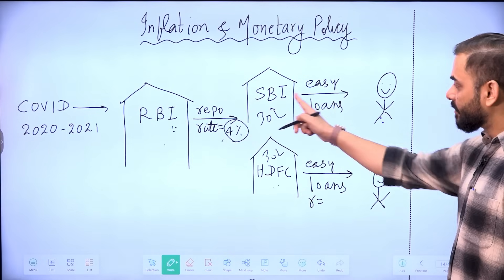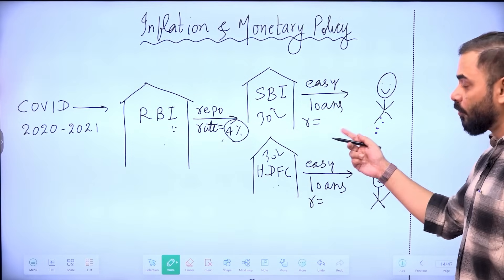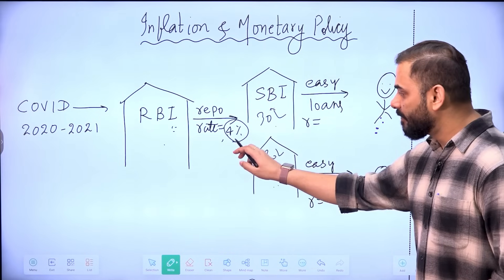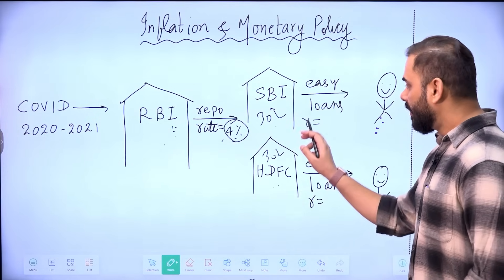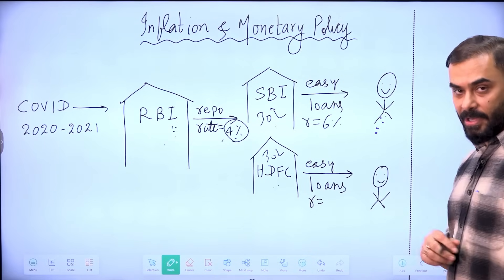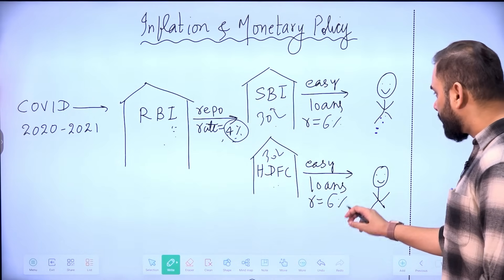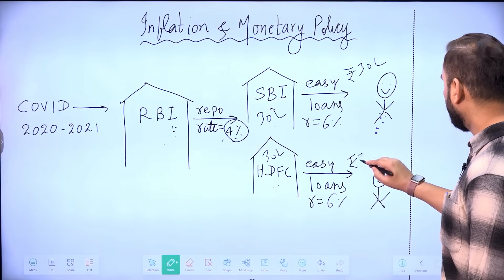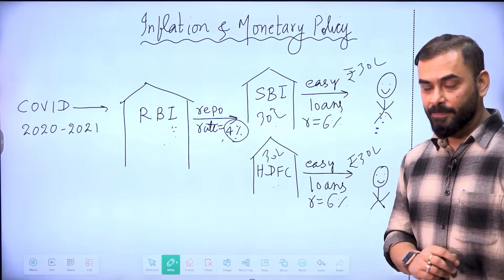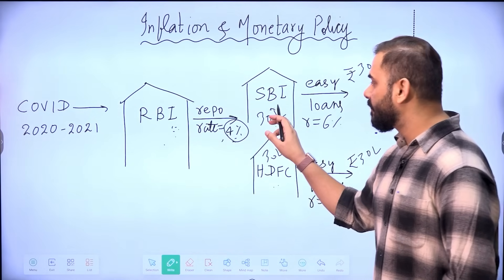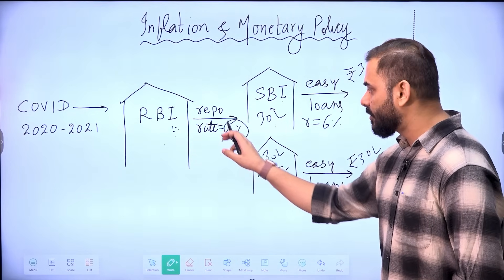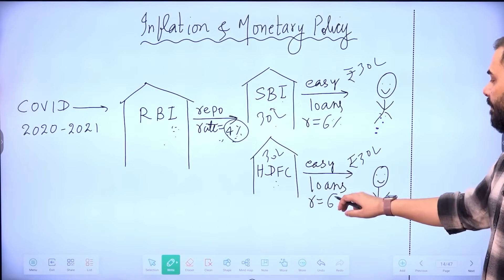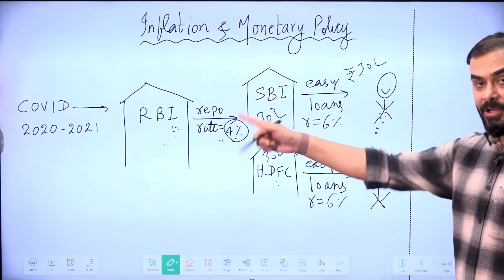That rate of interest, for example, let's say was 4%. This rate of interest is called repo rate. So at 4%, Reserve Bank of India gave 30 lakh rupees to SBI and 30 lakh rupees to HDFC. Why did RBI give the money to them, liquidity to them? Because there were people who were asking for loan. These people were saying that we need loan because we have health expenses and other requirements. Now if State Bank of India is paying 4% to RBI, State Bank of India will definitely charge 6% from public. Similarly, HDFC will also charge 6% from public. And how much loan is the public getting? 30 lakh rupees.